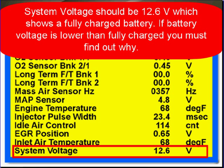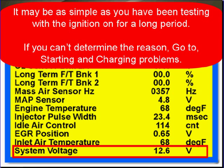System voltage should be 12.6 volts, which shows a fully charged battery. If battery voltage is lower than fully charged, you must find out why — it may be as simple as having the ignition on for a long period. If you cannot determine the reason, go to starting and charging problems.